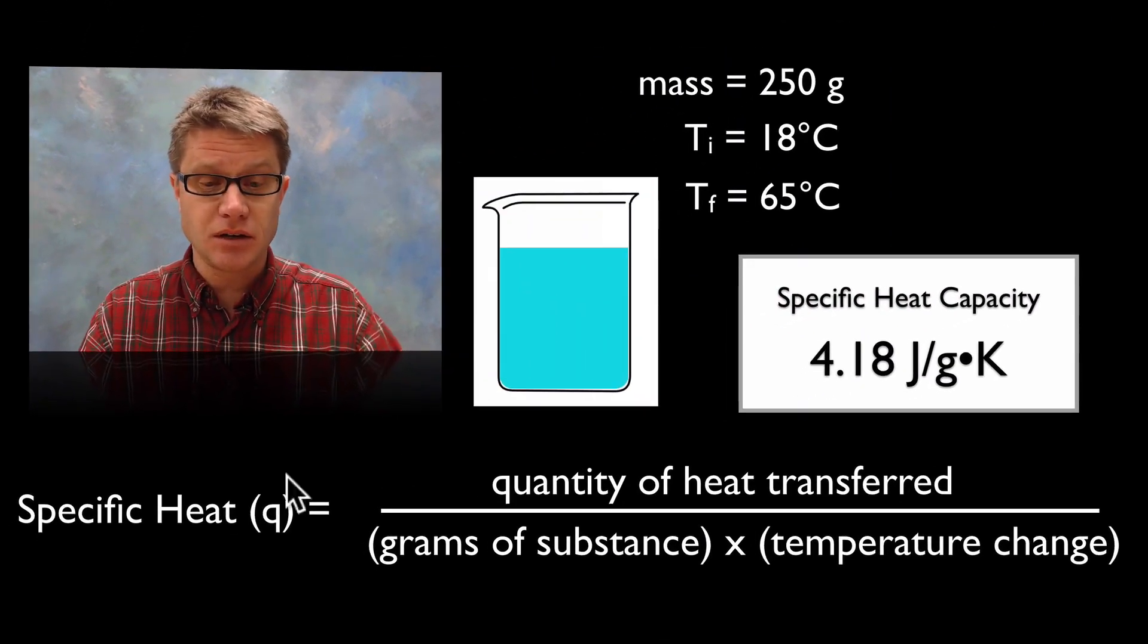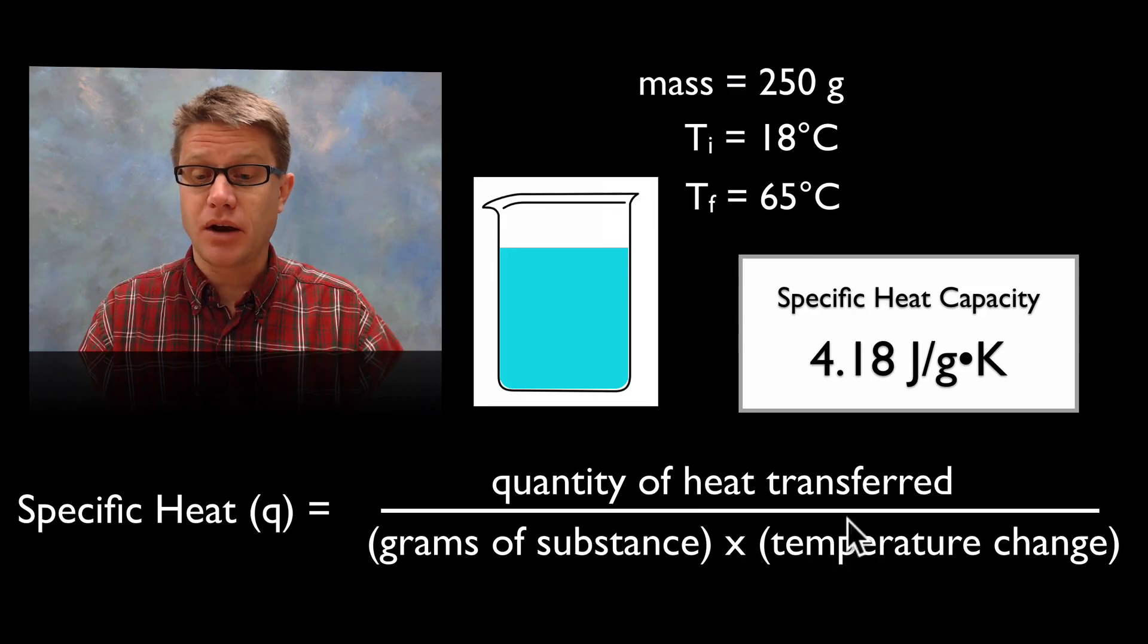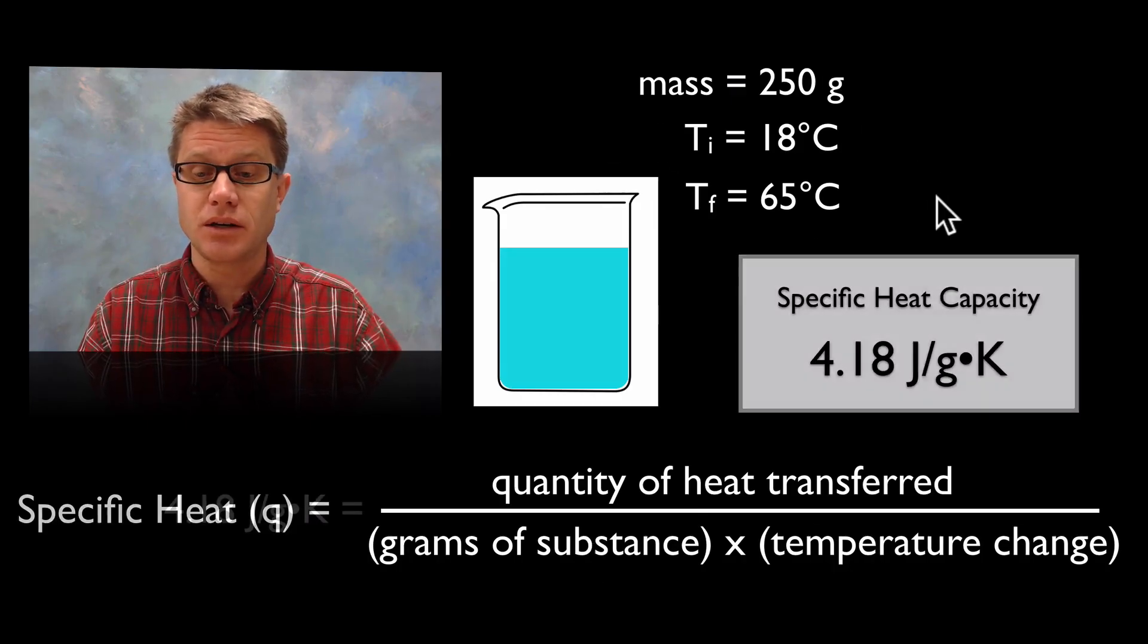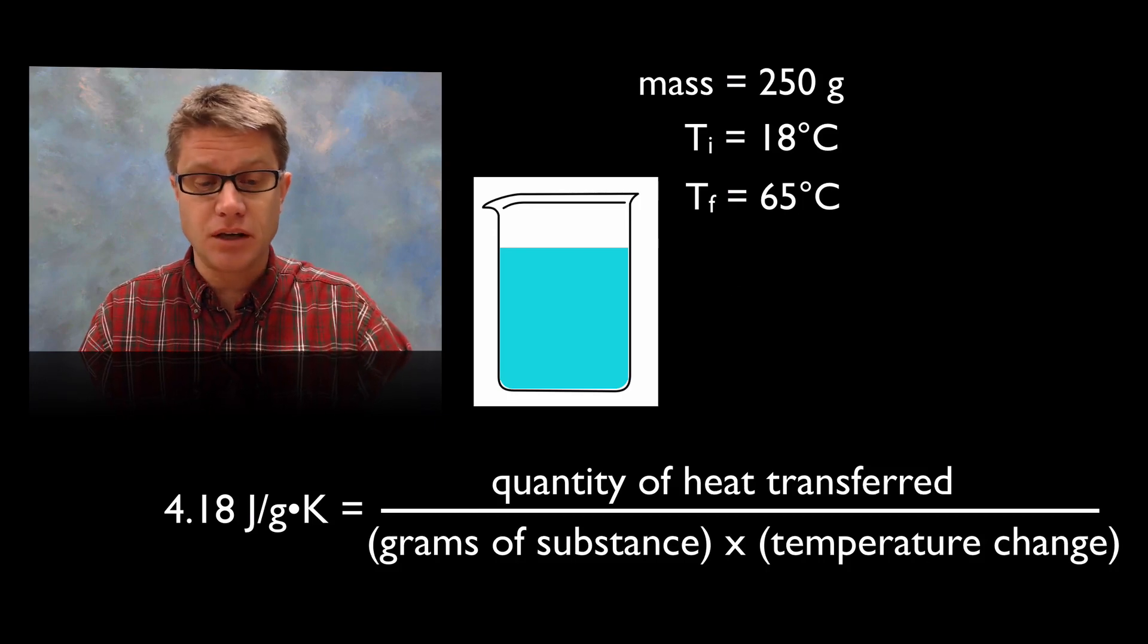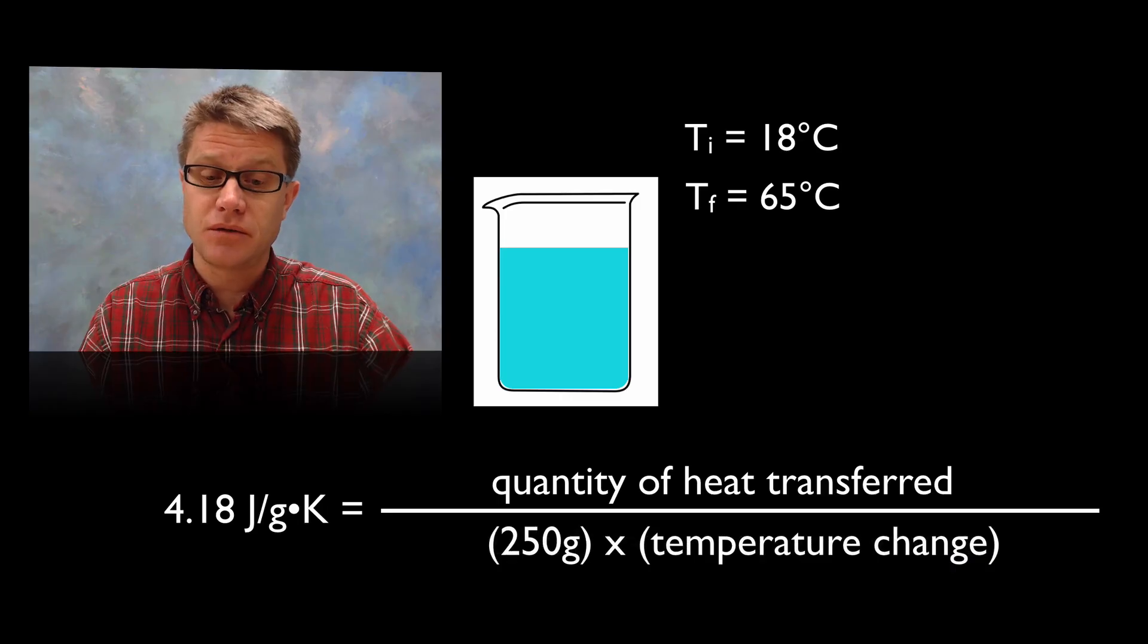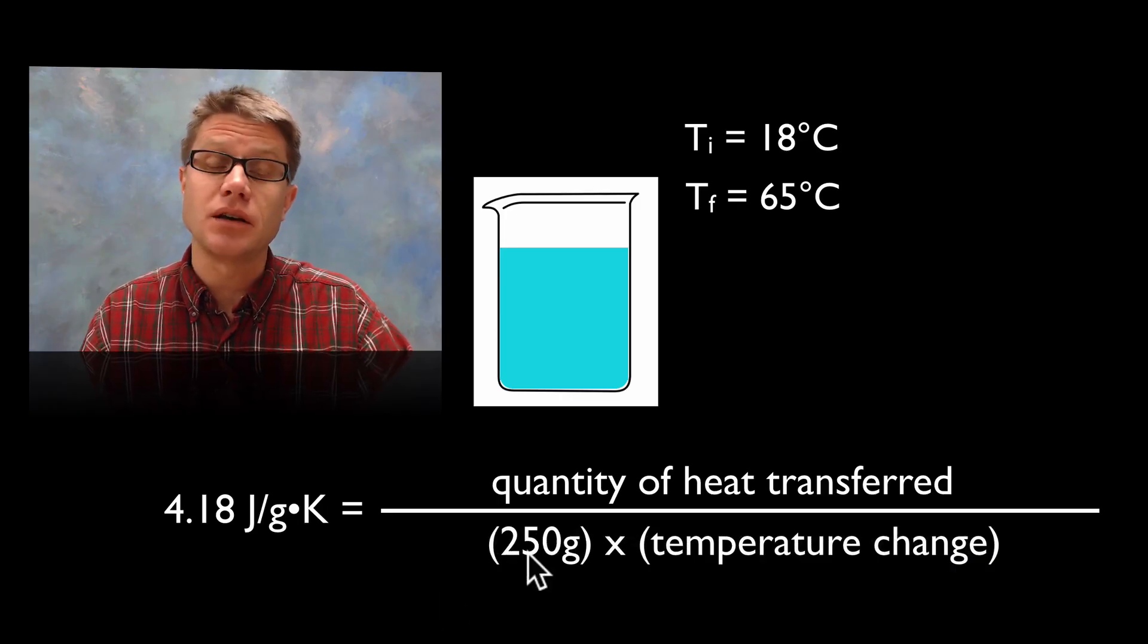Again, specific heat is equal to the quantity of heat transferred divided by the grams times the temperature change. And so let's just start working down these values right here. Well we know specific heat of water is going to be 4.18. We now know what the mass is. That's 250 grams. So I'm just going to plug that right here.